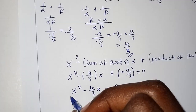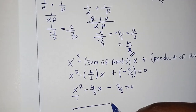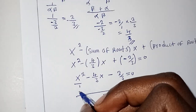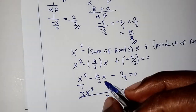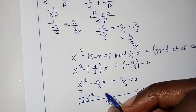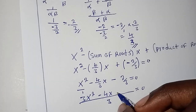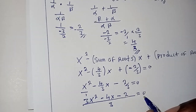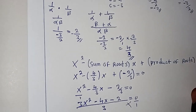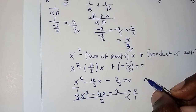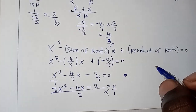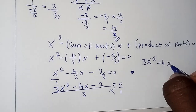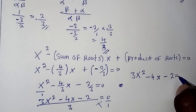To clear the fractions, we find the common denominator of 3. Multiplying through: 3 into x squared gives 3x squared; 3 into (4/3)x gives 4x; and 3 into (2/3) gives 2. Cross-multiplying, our final equation is 3x squared minus 4x minus 2 equals zero.